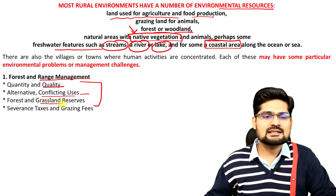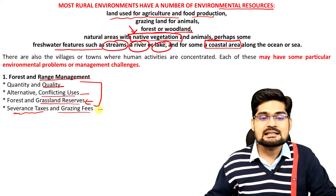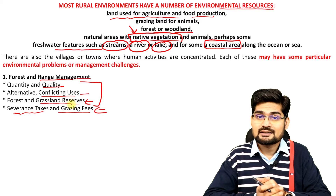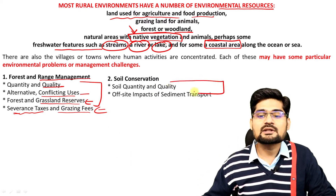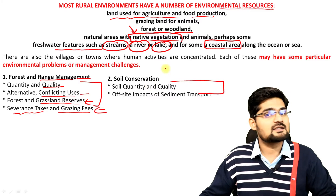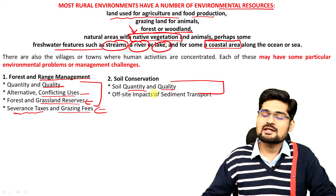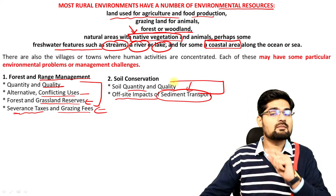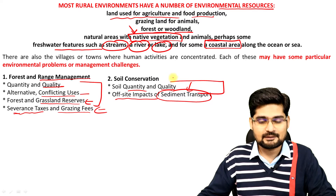Another issue is soil conservation, because soil degradation and land degradation have overtaken many areas of the world. This involves soil quantity as well as quality management, off-site impacts and sediment transport — remember, sedimentation and sediment transport, erosion — are very important factors.